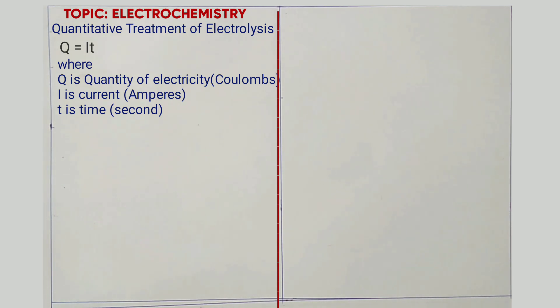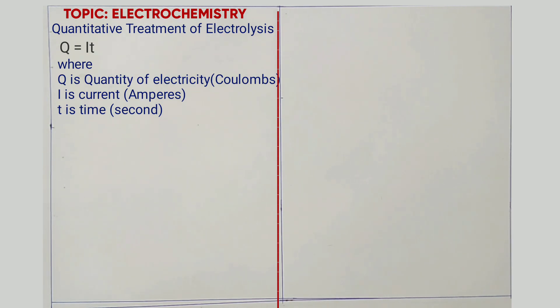The units of current are amperes. The units of time are seconds. The units of quantity of electricity are coulombs, that is C.